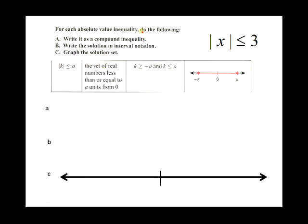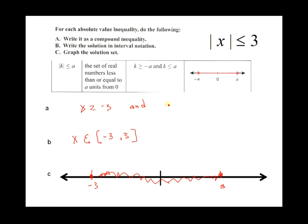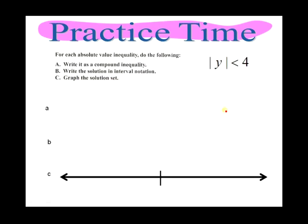The directions say: write the absolute value inequality as a compound inequality, write the solution in interval notation, and graph the solution set. We already wrote it as a compound inequality and graphed it. For interval notation, the solution is x ∈ [−3, 3], using brackets to signify that it includes negative 3 and 3. The compound inequality is x ≥ −3 AND x ≤ 3.